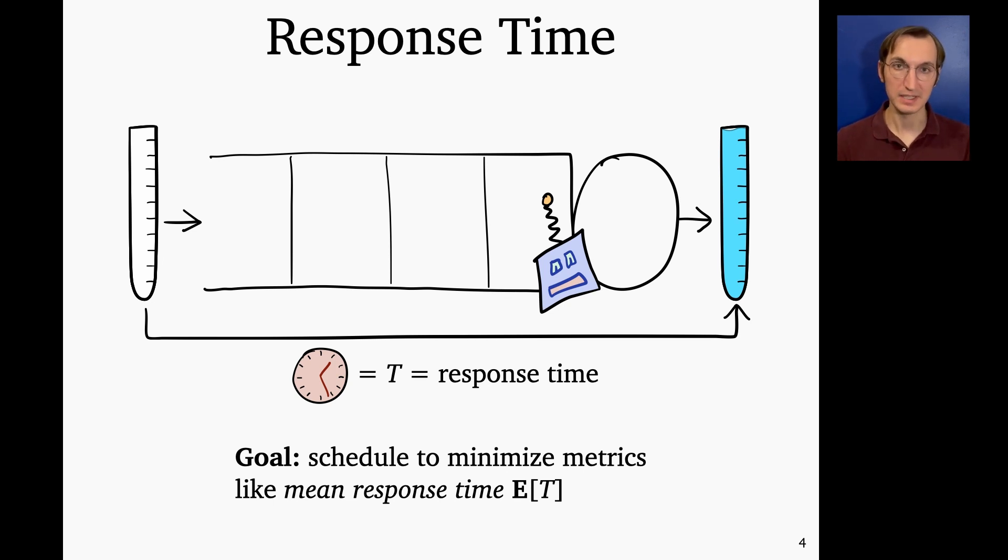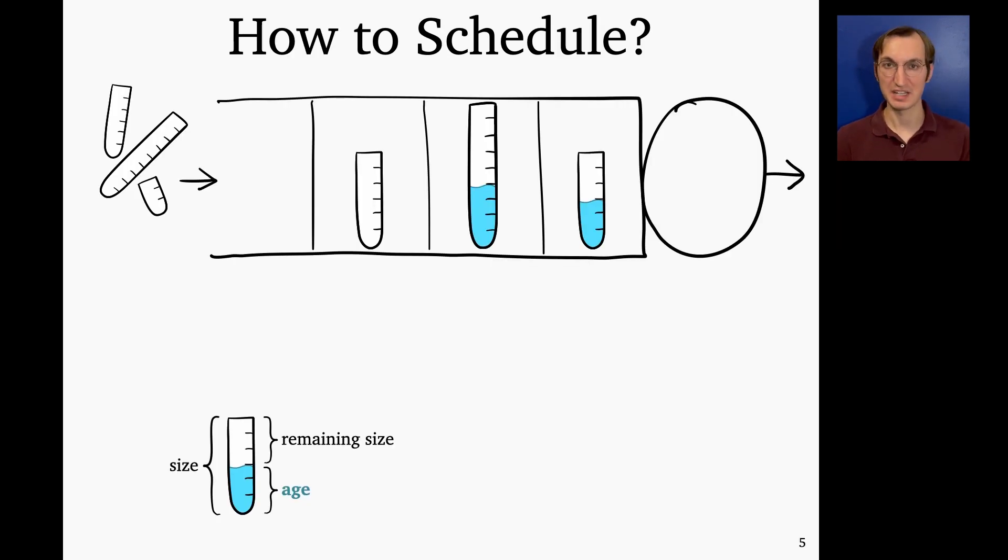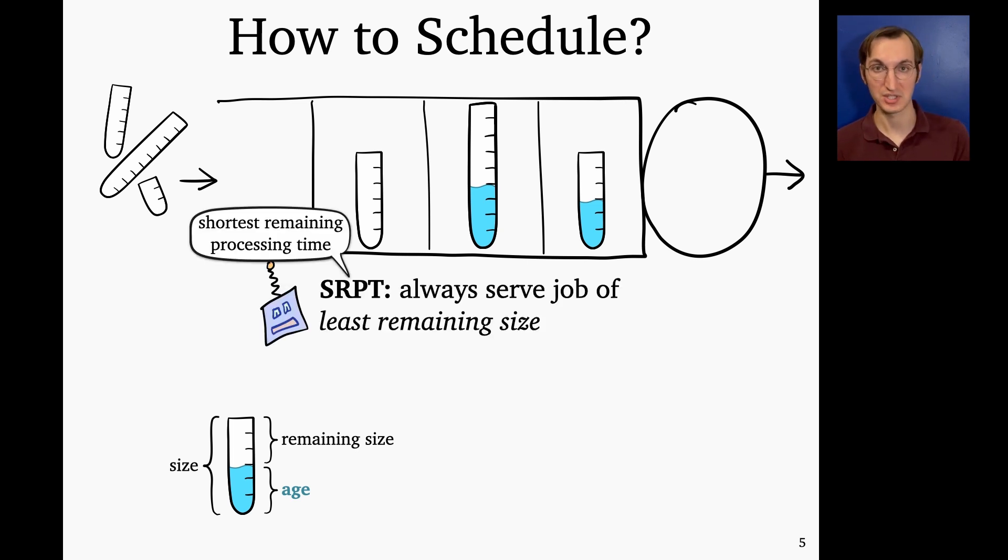And so a single job's response time is going to be affected by the scheduling policy we choose, because the scheduling policy decides when that job is in service and when it has to wait in the queue. And our goal today is going to be to minimize metrics like mean response time. So mean response time is the average response time over all jobs in a long arrival sequence. So let's start with specifically talking about how should we minimize mean response time. And let's start with a very simple case where we know every job's size, age, and remaining size.